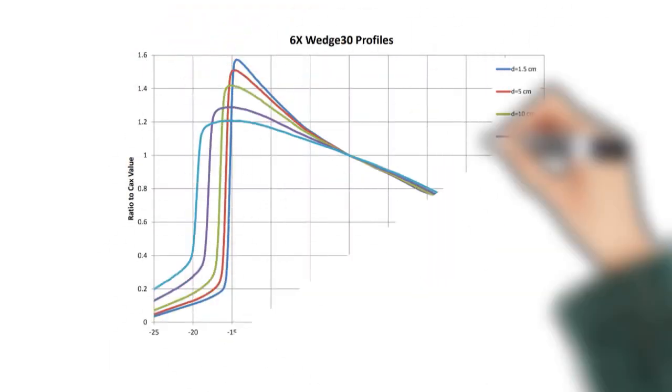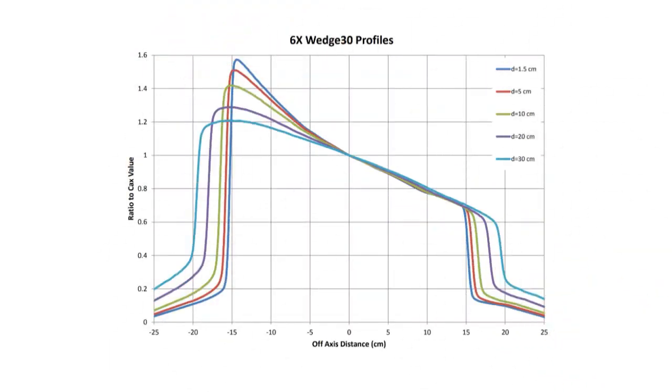Here are some example wedge profiles. Recall that when I defined the wedge factor, we split it into two parts: the central axis wedge factor and the off-axis ratio. This is where you'd get the off-axis ratio. The y-axis is the ratio to the central axis value, so depending on which distance you move off-axis and direction, you multiply your central axis wedge factor by whatever value you find on this plot. That gives you the total wedge factor for your calculation point. You can see profiles for different depths and some of that depth dependence.